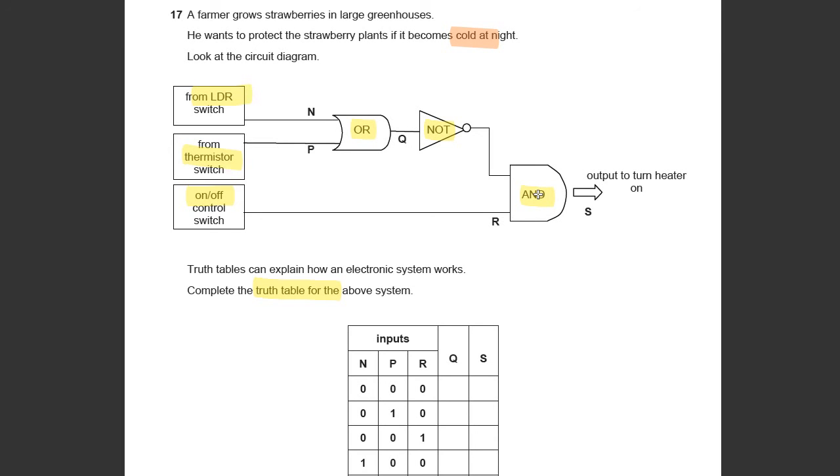Remember, it's about ones or zeros. So an OR gate is a one if either or both of them are on, are ones. So if you've got either N or P is a one, then Q is a one.